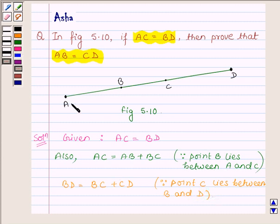That is, AC is equal to AB plus BC, and BD is equal to BC plus CD.